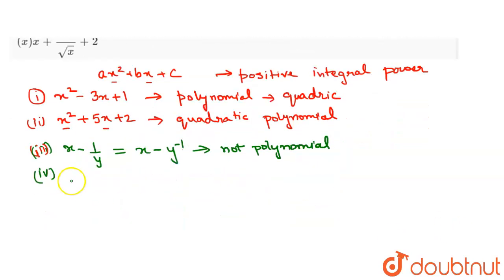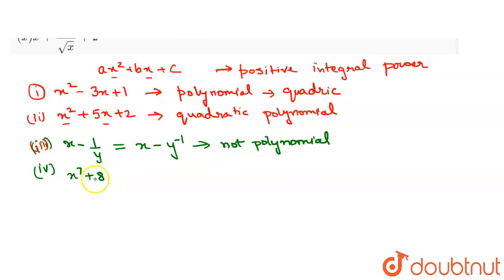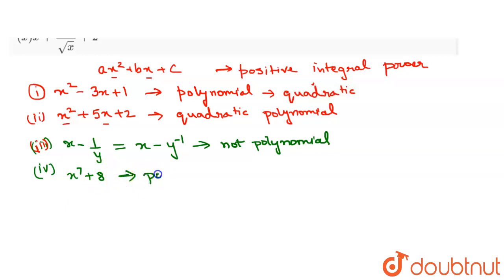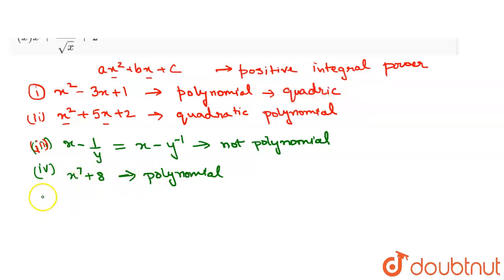The fourth question is x to the power of 7 plus 8. The power of the variable is positive and it is a whole number, and 8 is a constant. Since the powers are positive integral, this is a polynomial with highest degree 7.